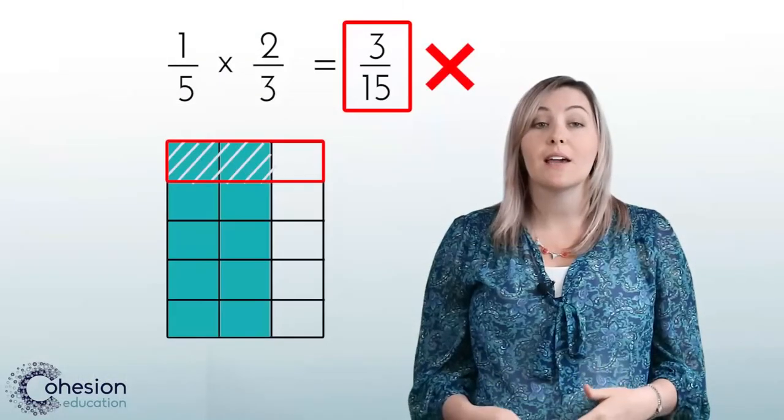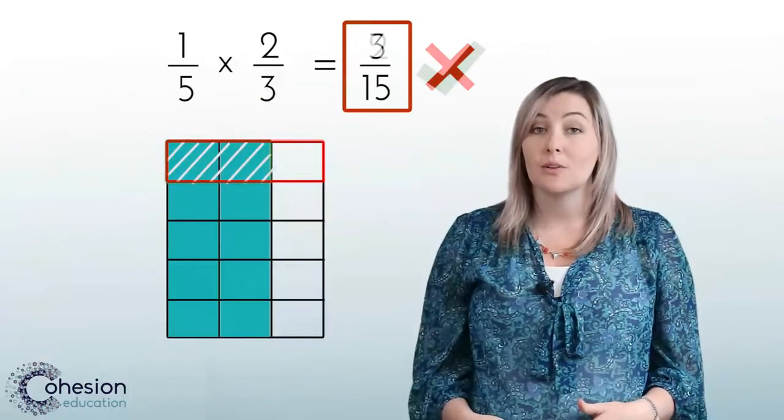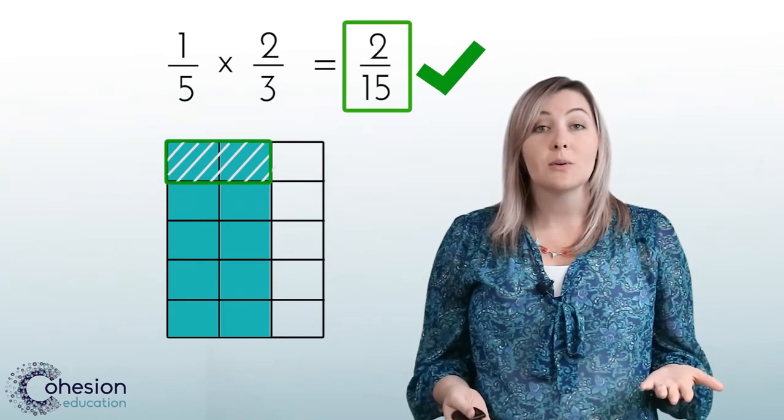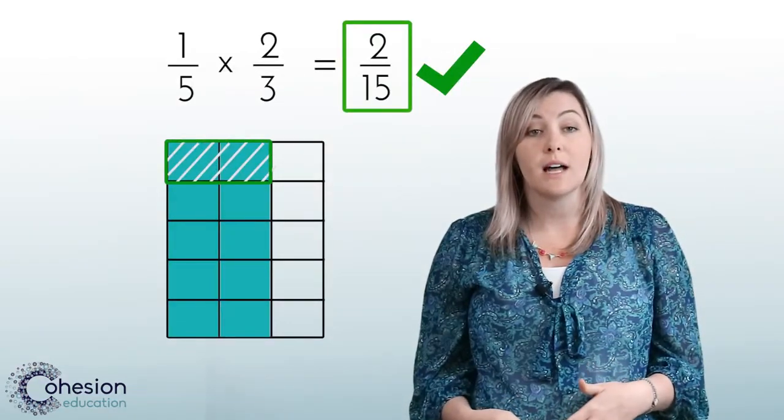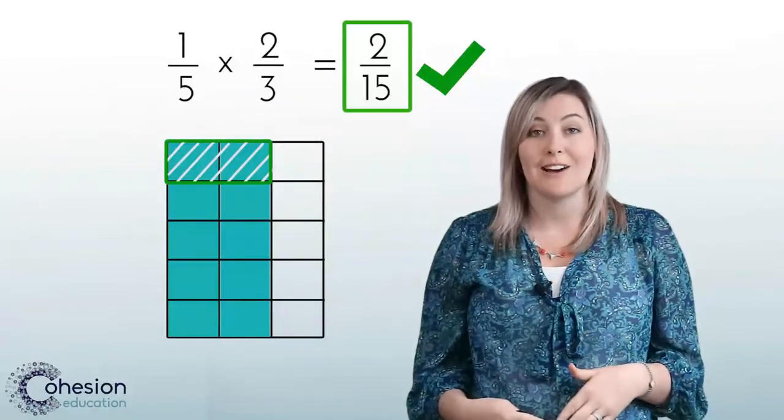Remind students that they are only looking for a part of what has already been shaded, not part of the whole model. You can also encourage students to use two different colors to make their models to really make the pieces that are double shaded stand out.